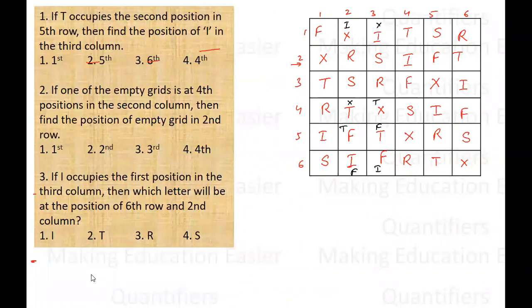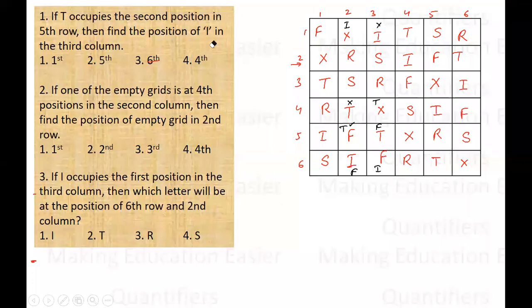Question 1: If T occupies the second position in the fifth row — that corresponds to the black color arrangement — then find the position of I in the third column. Looking at the black color arrangement, the position of I in the third column is the sixth one. The answer is option 3.